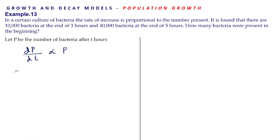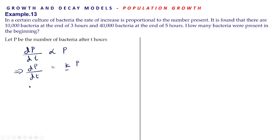We have dP/dt equal to kP, where k is the rate of growth or constant of proportionality. This is an ordinary differential equation of first order and first degree, and we know how to solve it.